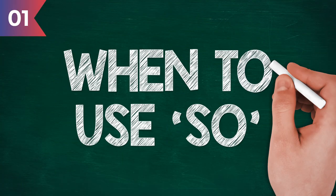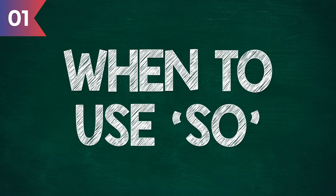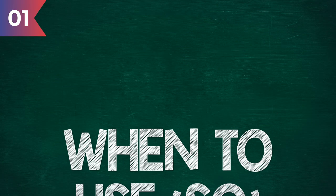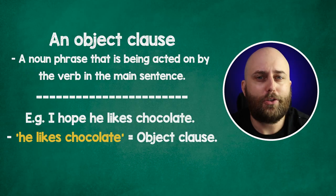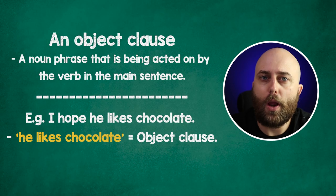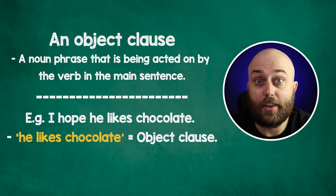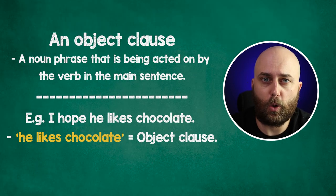So, when to use 'so' after verbs. We use 'so' after certain verbs when we want to replace the object clause in the sentence. In layman's terms, this is the thing that the verb is acting on — the phrase that comes after the verb.